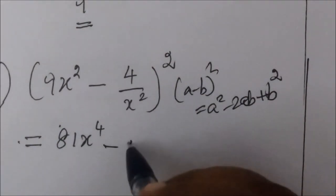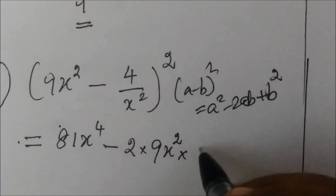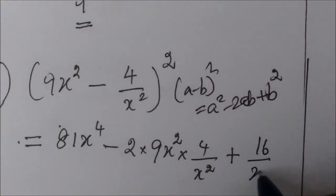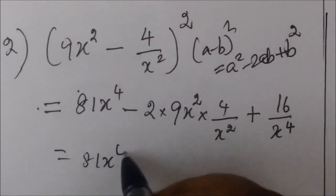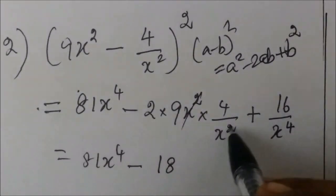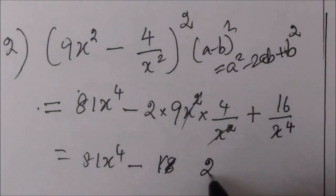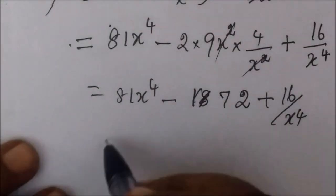For the next question, we expand using the formula a² minus 2ab plus b². This gives 2 into 9x squared, then 4 by x squared, plus b squared giving 16 by x to the power 4. So this is equal to 81x to the power 4 minus 18, then 12, then 16 by x to the power 4.